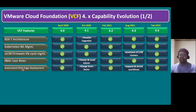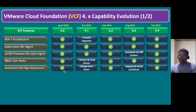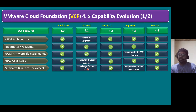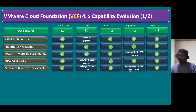Another feature is automated NSX edge deployment. Normally edges must be deployed manually, but from VCF 4.0 onwards, you can deploy NSX edges automatically using the SDDC Manager. This is available from 4.0 through 4.4. In version 4.1, they also added the x-large form factor — edges are available in small, medium, large, and now x-large T-shirt sizes. In version 4.3, expand and shrink workflows were also added.